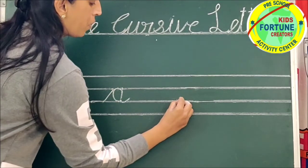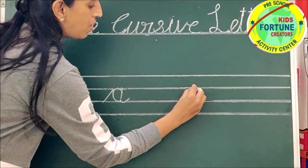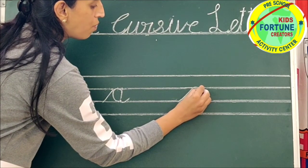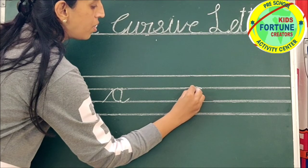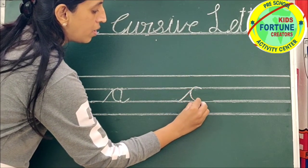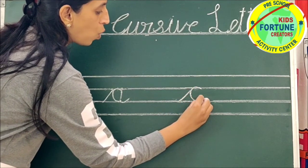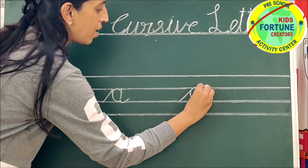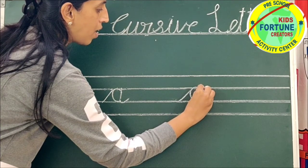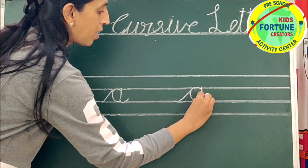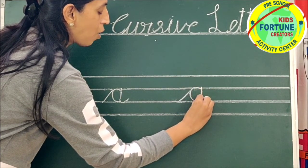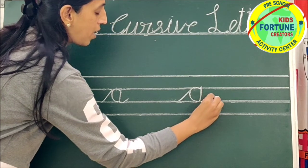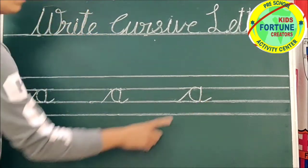Go up with slant line. Move forward. Come back. Go up with standing line. Again come back on same line. Make a 10. A.